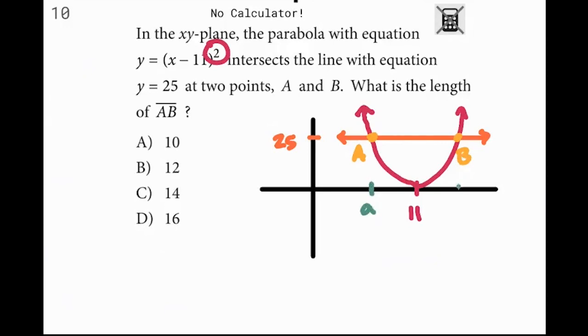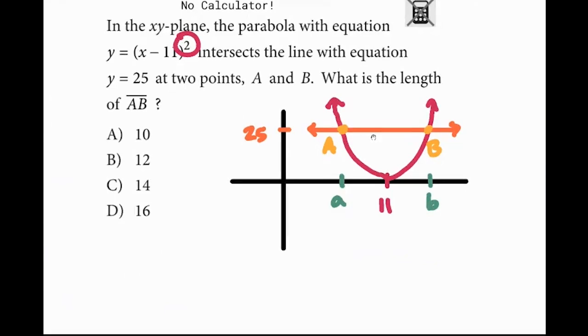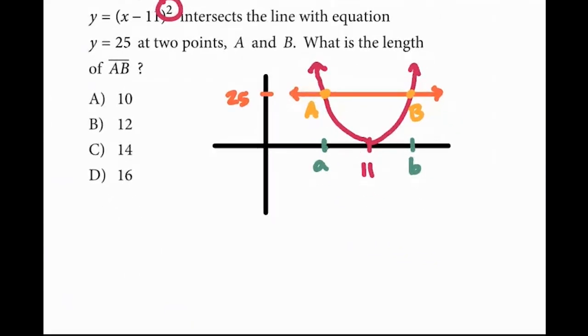So I'll just call that A and the x value here, which is B. Then we can just subtract. To find A, where this intersects, I need to set the equations equal to each other.